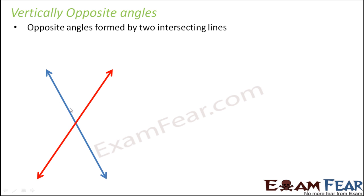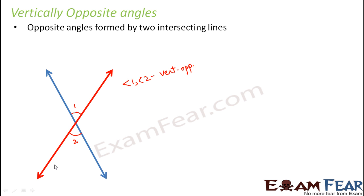Whenever two lines intersect, opposite angles are formed. If you look at this angle — let's call this angle 1 — which angle is opposite to it? The adjacent angles are located side by side, but the angle located exactly on the other side is the vertically opposite one. So angle 1 and angle 2 are vertically opposite angles.